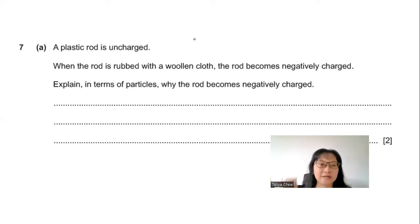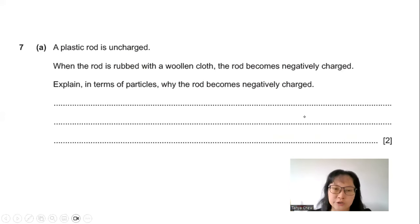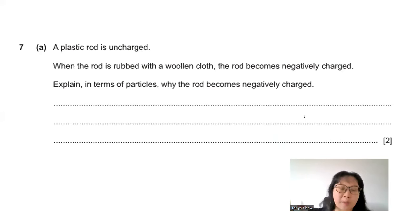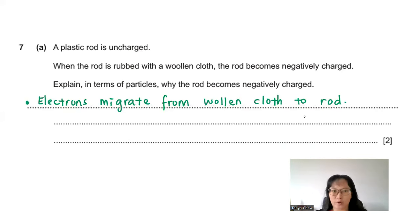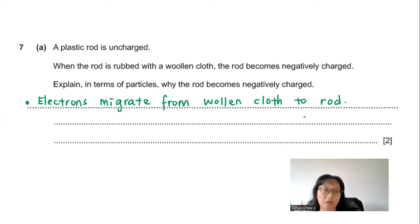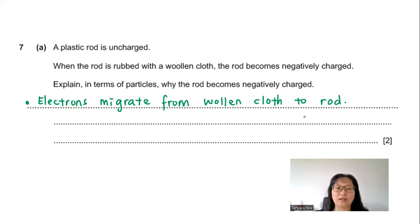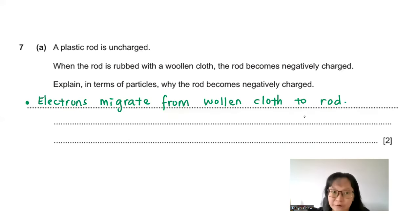Question 7: A plastic rod is uncharged. When rubbed with a woolen cloth, the rod becomes negatively charged. Explain in terms of particles why the rod becomes negatively charged. Only electrons can move or migrate. The electrons migrate from the woolen cloth to the rod during rubbing.